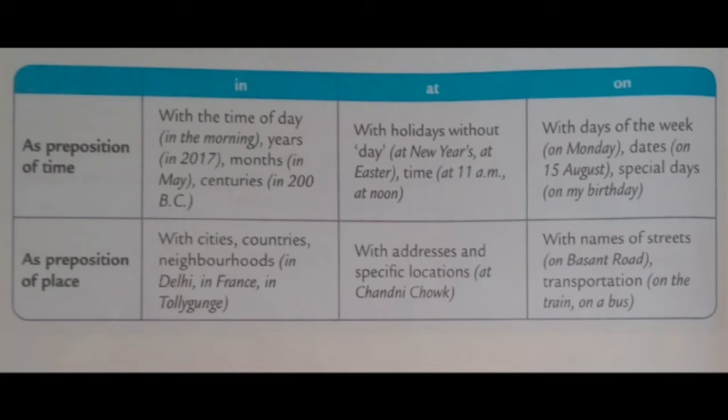Moving to prepositions of place — 'in' is used with cities, countries, and neighborhoods. 'At' is used with addresses and specific locations. 'On' is used with names of streets and transportation.